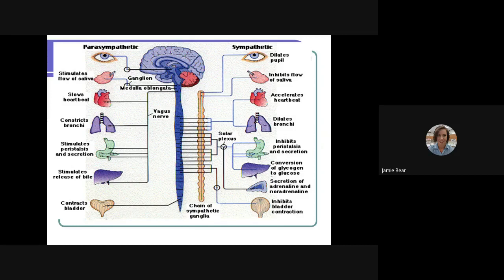When we get a sympathetic output or a sympathetic pulse from epinephrine, our pupils dilate. We have inhibition of saliva. Our heartbeat accelerates. Our bronchioles dilate so more flow can get down into the alveolar sacs. Peristalsis is decreased in our GI tract. We have conversion of glycogen to glucose and secretion of adrenaline and noradrenaline. Also, we have inhibition of our bladder contraction.